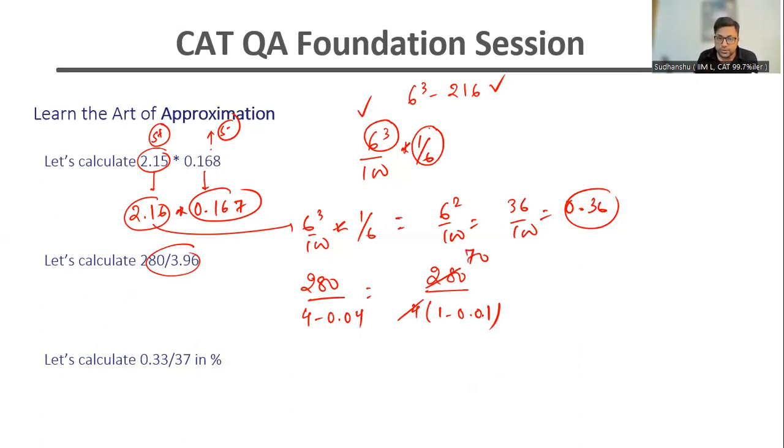Whenever you have a situation like this, this can be written as 70 into 1 minus 0.01 to the power minus 1. Whenever this number is very small as compared to this number, then 1 minus n to the power minus 1 can be approximated as 1 plus n. So this becomes 70 into 1 plus 0.01. 70 into 0.01 is 0.7. Then this becomes 70 plus 0.7, which is 70.7. I hope this is clear.